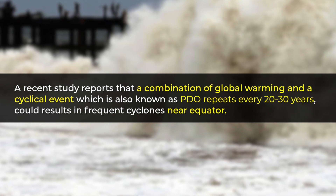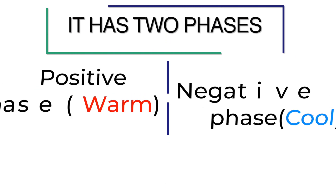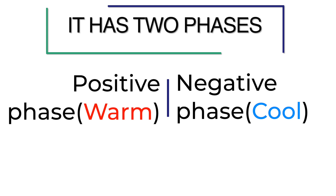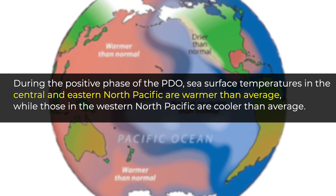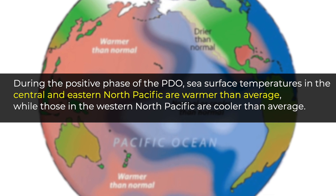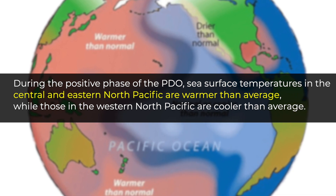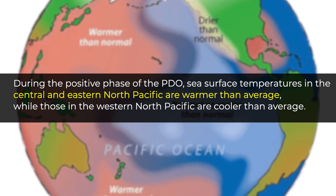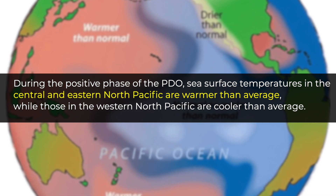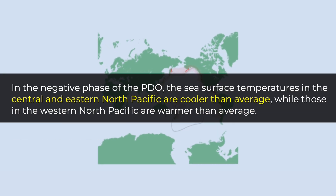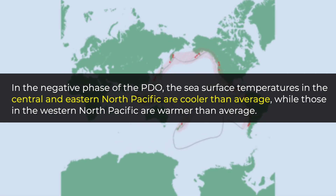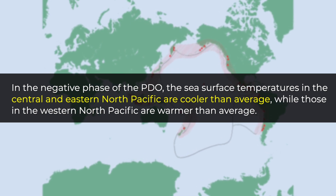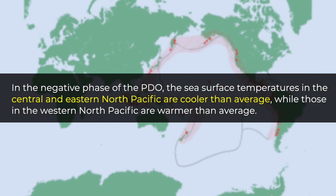This could result in frequent cyclones near the equator. PDO has two phases: a positive phase and a negative phase. During the positive phase, sea surface temperatures in the central and eastern part of the North Pacific Ocean are warmer than average, while those in the western North Pacific Ocean are cooler than average. In the negative phase, the central and eastern part are cooler than average, while the western part is warmer than average.